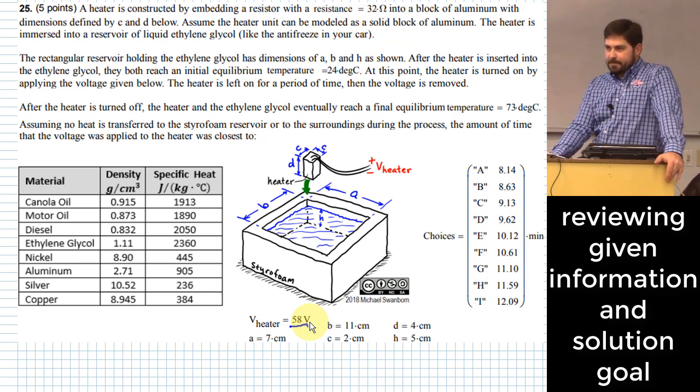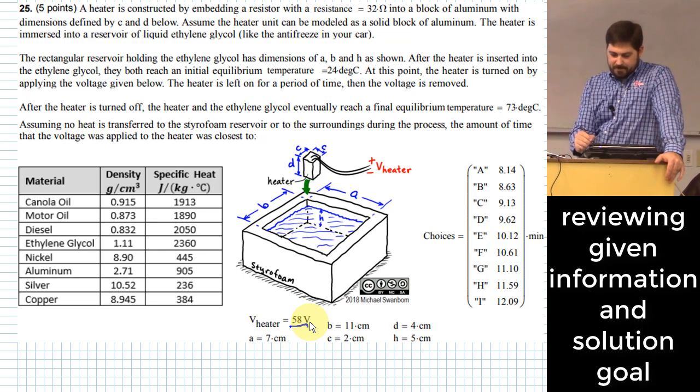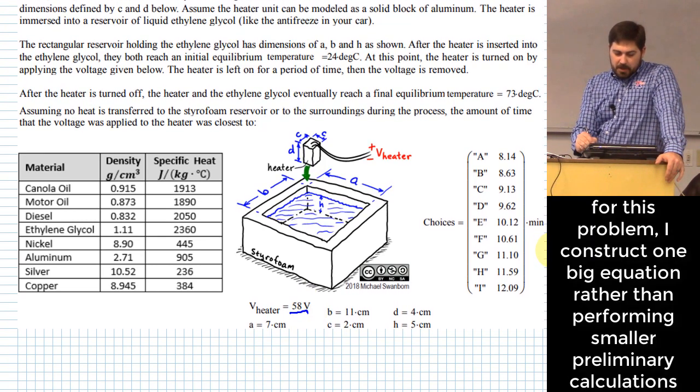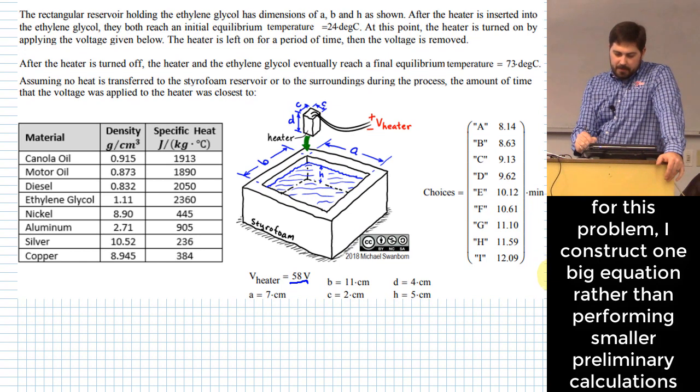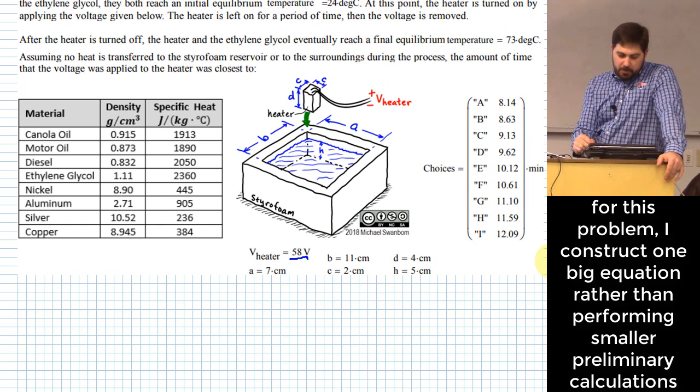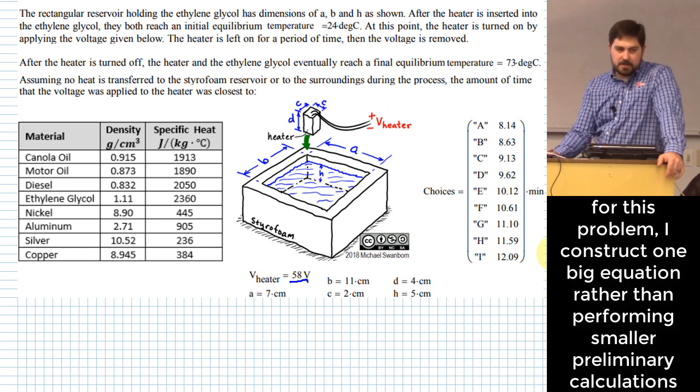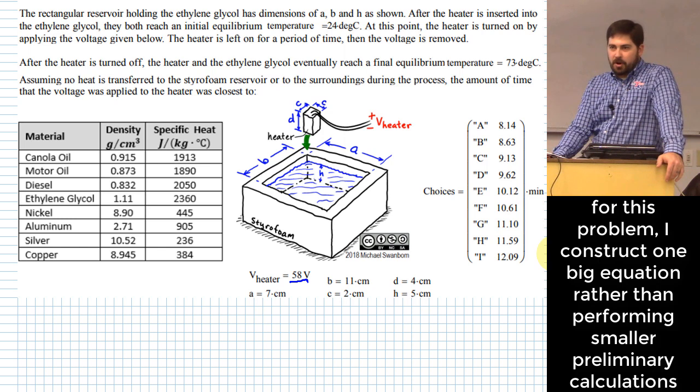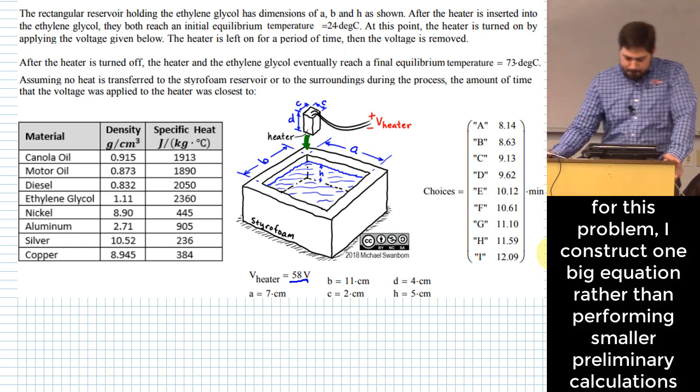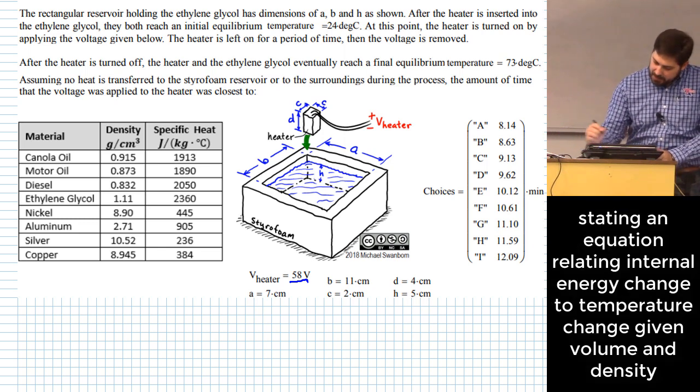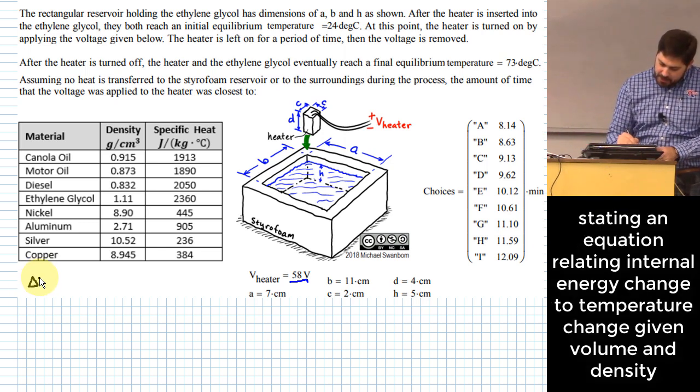Where should we start? We could start with some volumes, but let me actually do this one a little different. I'm going to actually put all the volumes directly into my main equation. We can do all of this with just one big fat equation. Before I do that, let me show you where this comes from. Change in internal energy—we're always used to seeing this as mass times your specific heat times your delta T.